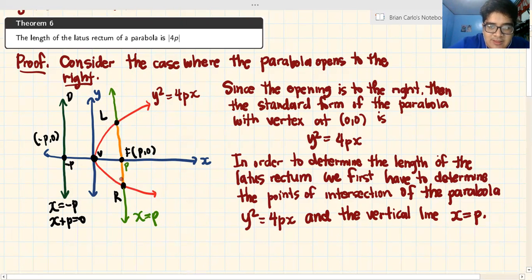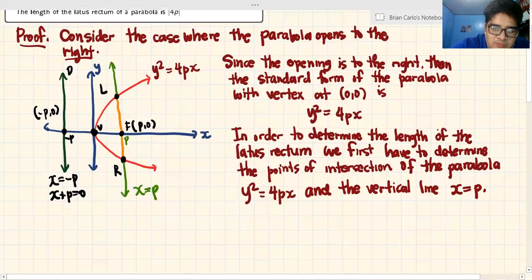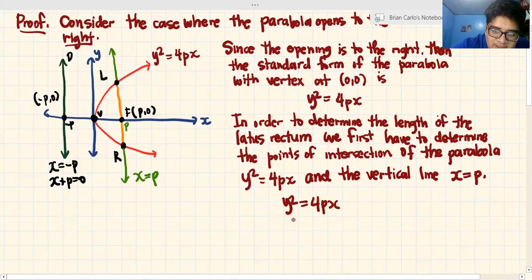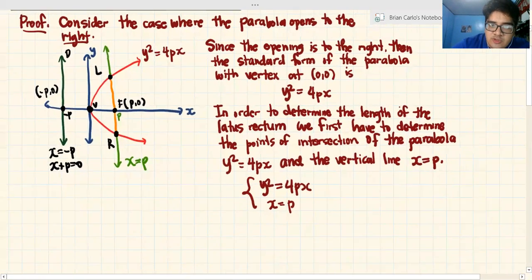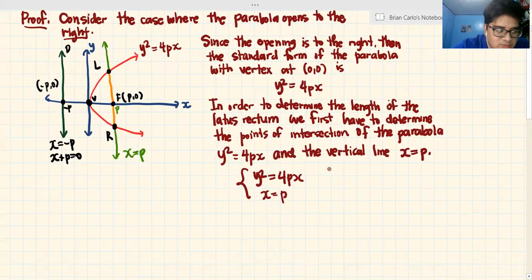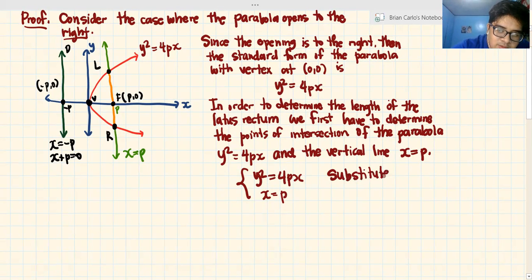Points of intersection of the parabola y² = 4px and the vertical line x = p. You need to find the intersection of the red parabola and the green line. You need to know the points of intersection because there's a purpose why we need to know them. Now, how do we do that? y² = 4px and x = p. What can we do with the given equations? Substitute.